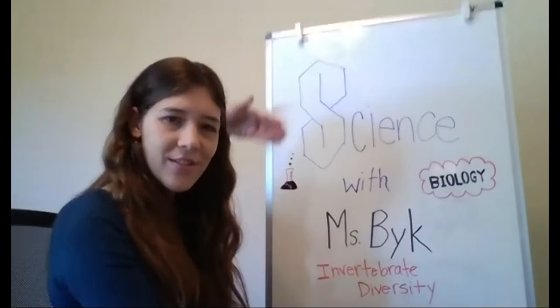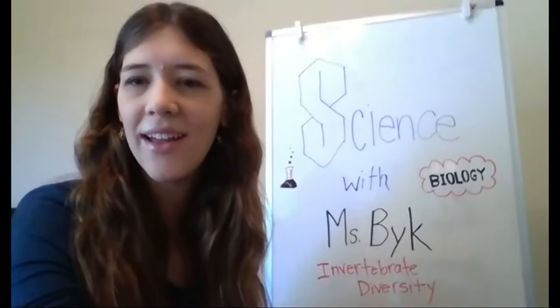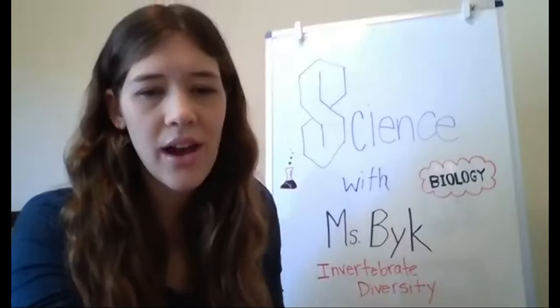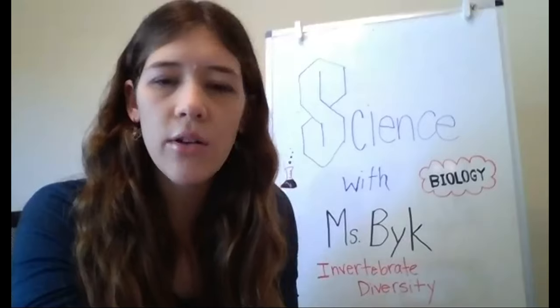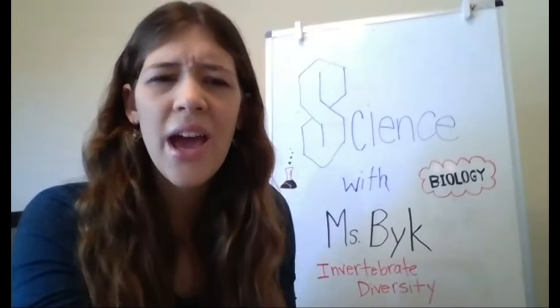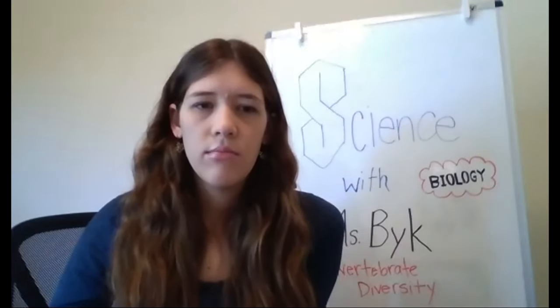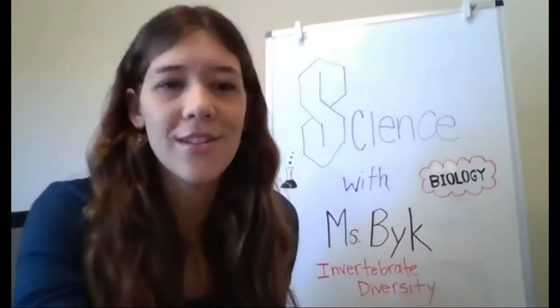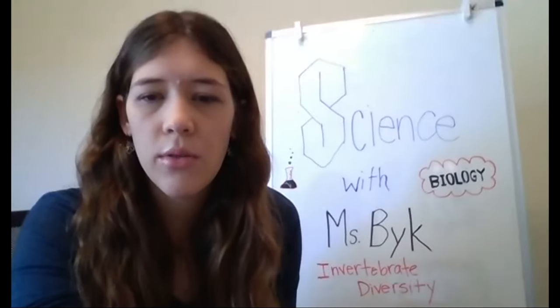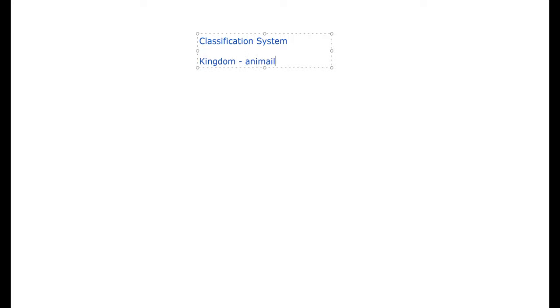I've got my nice board here — you can see the topic: invertebrate diversity. Before we dive in, I'll ask: have you guys gone over the classification system — kingdom, phylum? No? Good, so we are going to go right over that. We'll start with the classification system. There are actually seven levels of classification. We start with the kingdom — if you've ever heard of the animal kingdom, that is the kingdom Animalia.